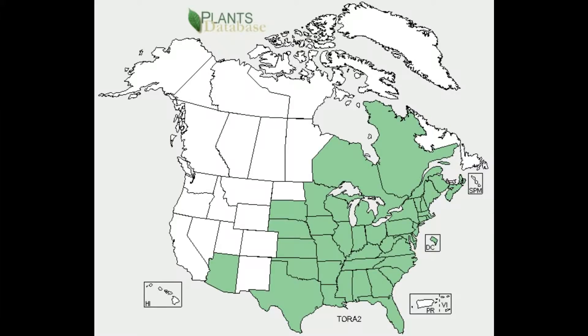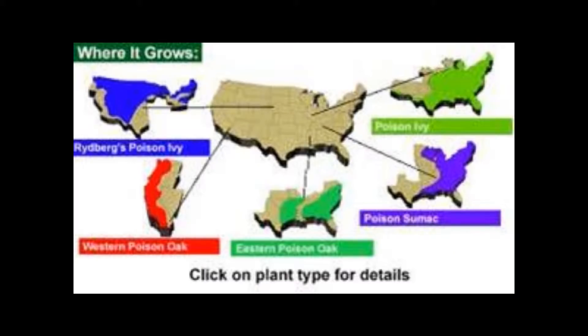The plant is found mostly in North America. It is widespread in the United States and can also be found in southern Canada as well as northern Mexico. It is virtually non-existent in Europe and other areas of the world. There are different types of poison ivy and oak in different parts of the United States, and poison ivy is much more prevalent on the eastern coast, stretching to the Great Plains.